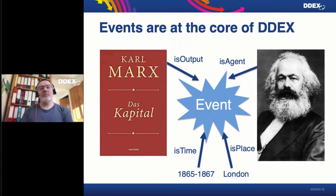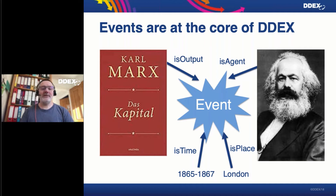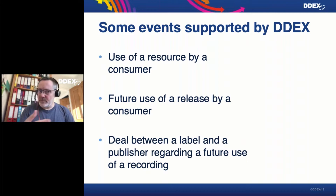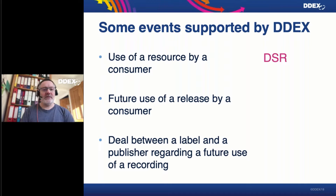You not only need to describe this entity, you also need to link it to other entities — in this case the entity of Karl Marx, who wrote the whole thing between 1865 and 1867 in London. You can then describe the relationships between those entities with respect to an event: the book is the output, the person is the agent that created the output, and then you have a specific time and a specific place. That's really the crucial bit — not just for books but for music as well. For example, the use of a resource by a consumer — paid, in a specific territory, at a specific price — is described in the DSR message.